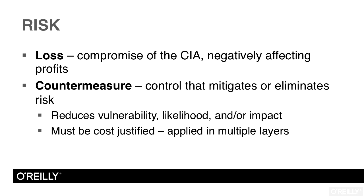Picking up where we left off on risk, the next term we need to consider is loss. Loss implies some compromise of the CIA — the confidentiality, integrity, and/or availability of our valuable information assets. If these assets get compromised in this manner, it has a negative impact on our profits — we will lose money. Therefore, we have a loss. A countermeasure is some control whose job is to either eliminate or reduce the potential for loss.